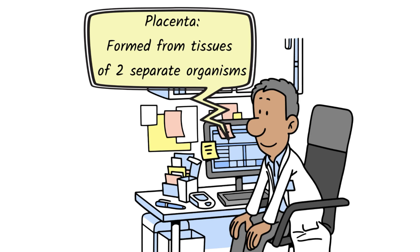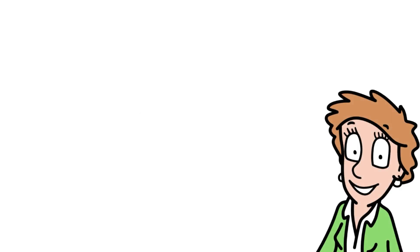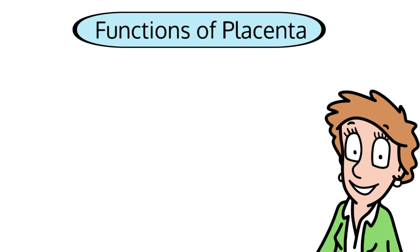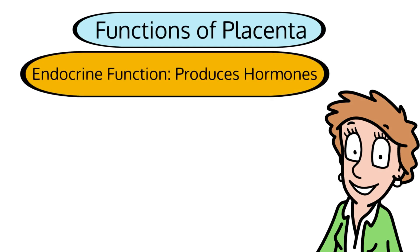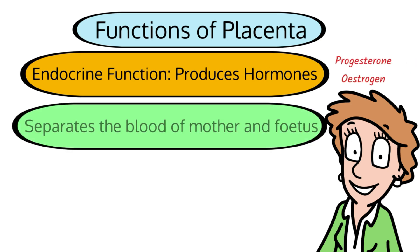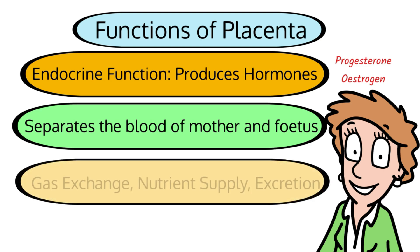The placenta has a number of functions and it's very important that you can list them. Number one, the placenta has an endocrine function — it produces hormones, particularly progesterone and oestrogen. Number two, it separates the blood of the mother and the fetus, which is very important in case there are incompatibility issues and the mother's immune system attacked the fetus. Gas exchange, nutrient supply, and excretion all happen through the placenta.